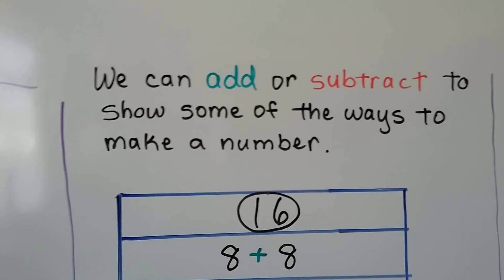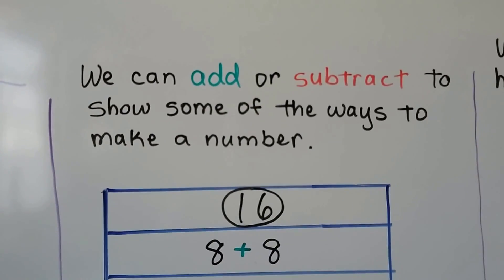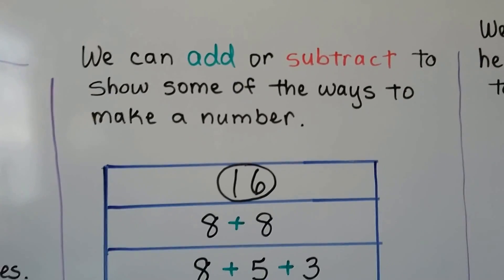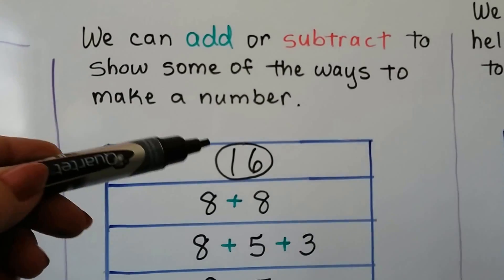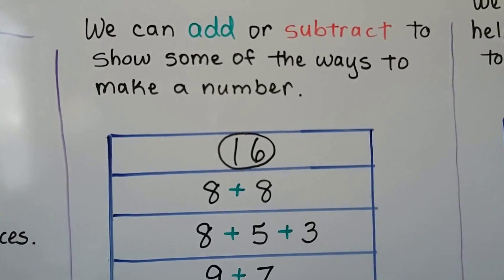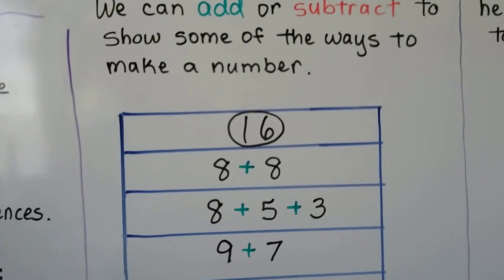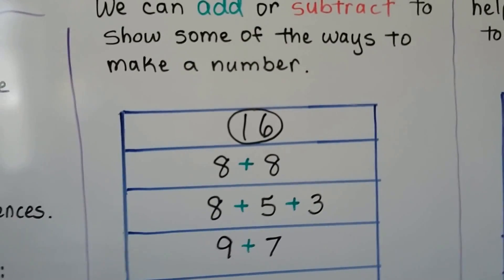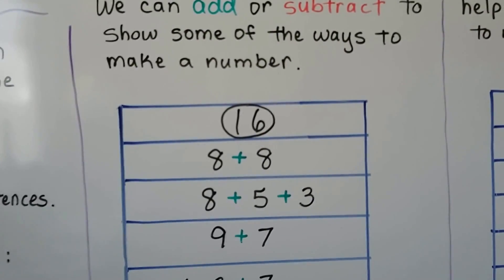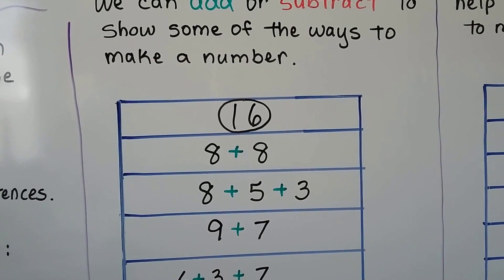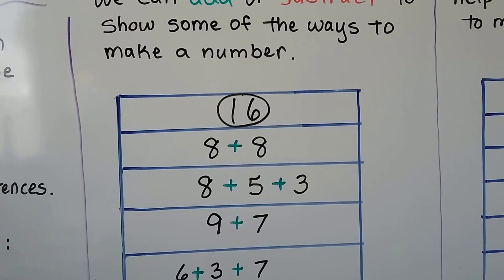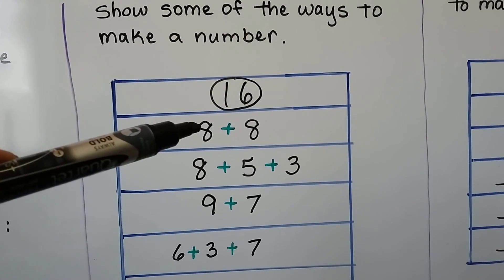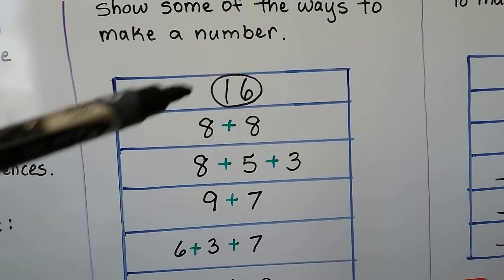We can add or subtract to show some of the ways to make a number. Here we have 16 at the top. We need to come up with different addition and subtraction sentences that will equal 16, the number at the top. We can add a double — 8 plus 8 — that will give us 16.